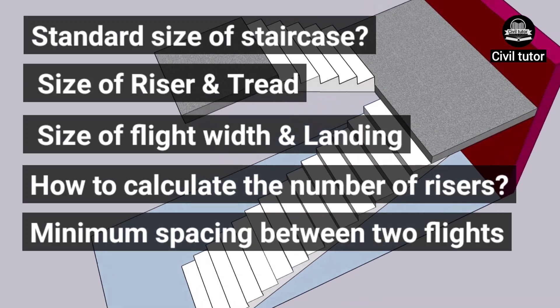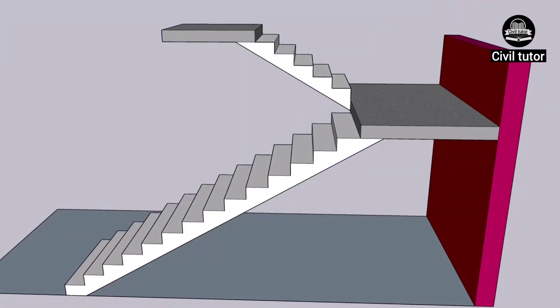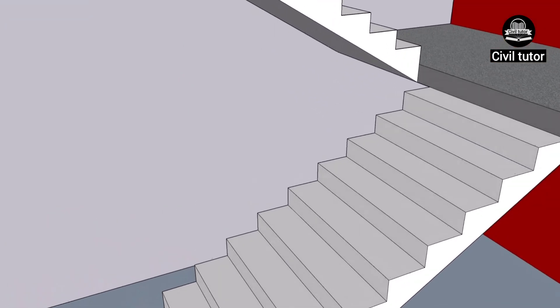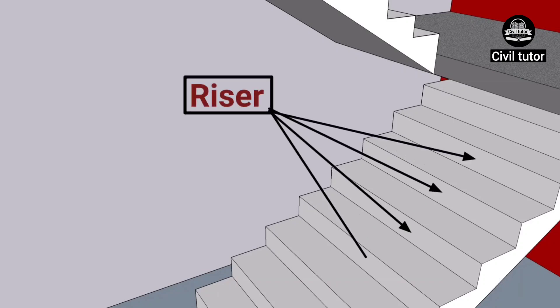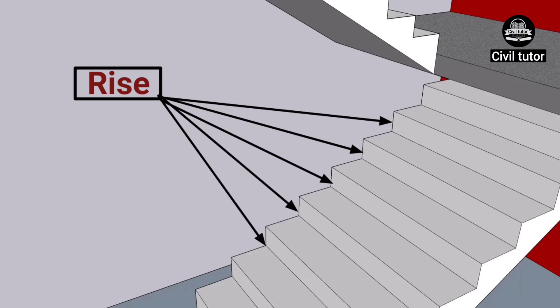Let me introduce you to the main components of a staircase. The top horizontal surface of a step over which the foot is placed while ascending or descending a stairway is known as tread. The vertical member of a step is known as riser. It provides support and connection between successive treads. The vertical height between two consecutive treads is known as rise.